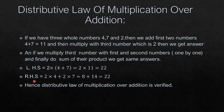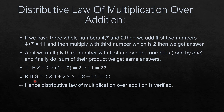Right hand side: we open the bracket and multiply 2 with the first term 4, giving 2 into 4 equals 8. Then multiply 2 with the second term 7, giving 2 into 7 equals 14. Then we sum the products: 8 plus 14 equals 22. Left hand side equals right hand side. Hence, distributive law of multiplication over addition is verified.